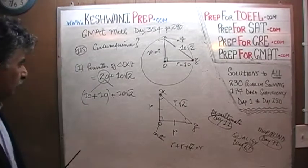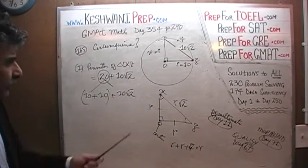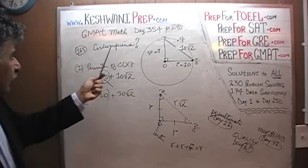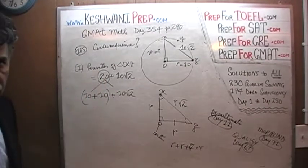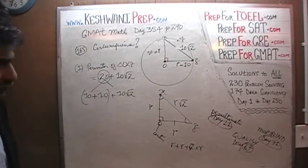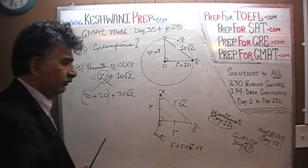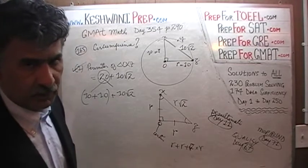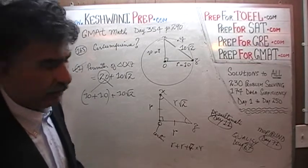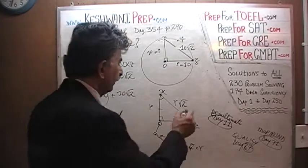So now we know the radius. If we know the radius, can we figure out the circumference? Of course we can. The first statement does the job quite nicely. If we know the radius of a circle, we can figure out the circumference.